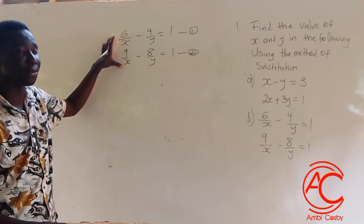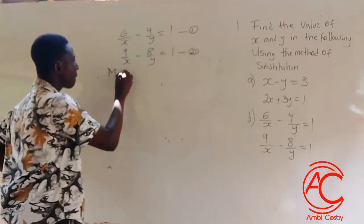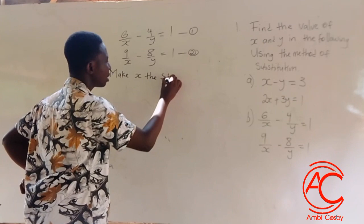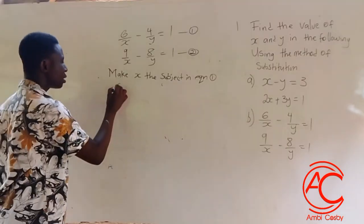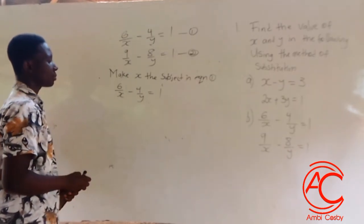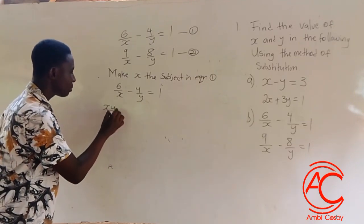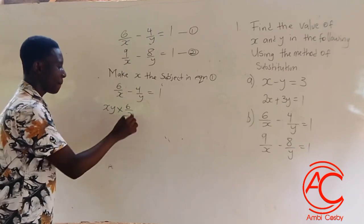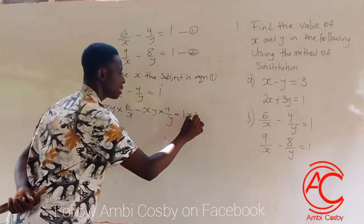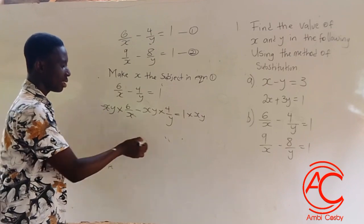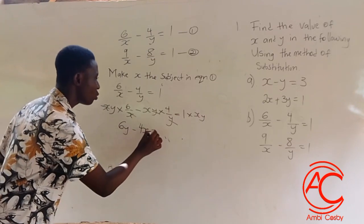This question looks quite different — it's in fraction form, so we have to find the LCM first. We are making x the subject in equation 1: 6 over x minus 4 over y is equal to 1. The LCM here is xy, so we multiply through by xy. This gives us 6y minus 4x is equal to xy.